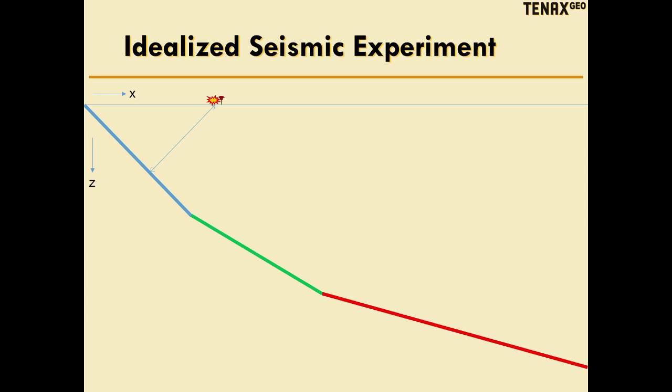And notice when we send a seismic signal down into the Earth, it basically travels obliquely to reflect off of that 45 degree dipping layer and is reflected back to the geophone and recorded.